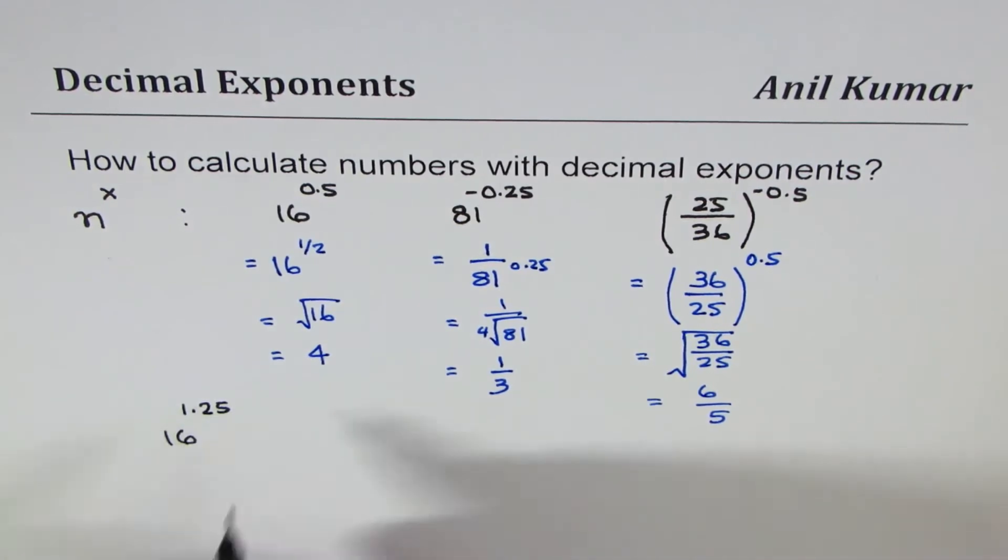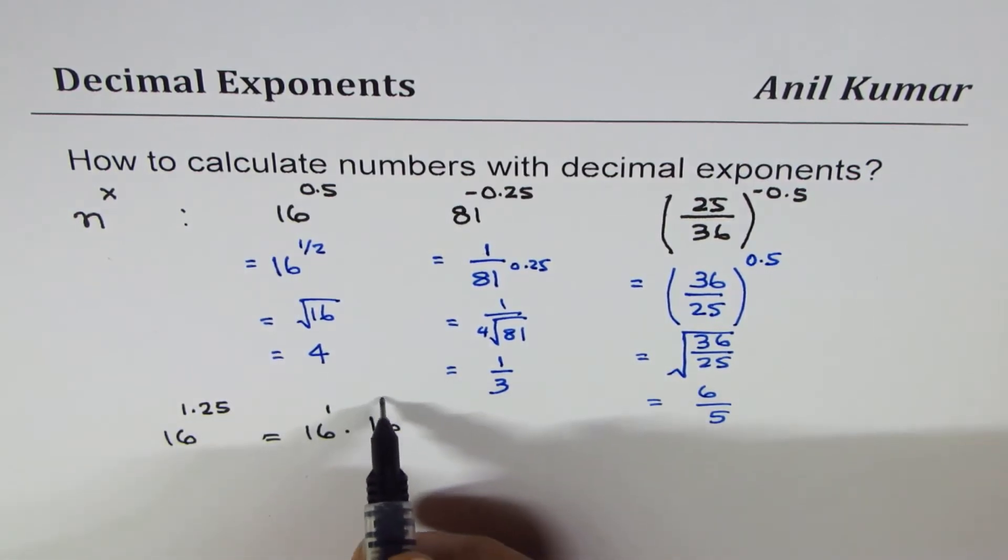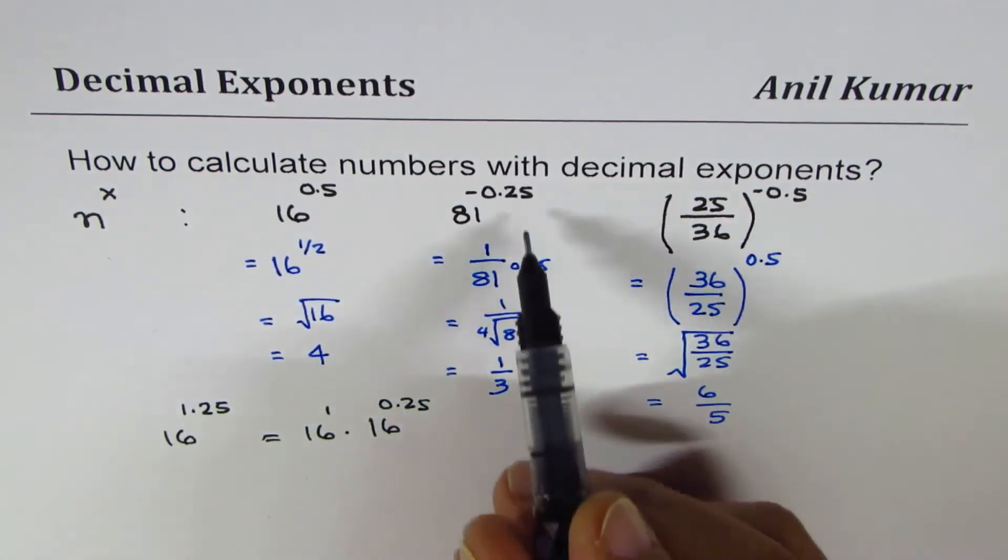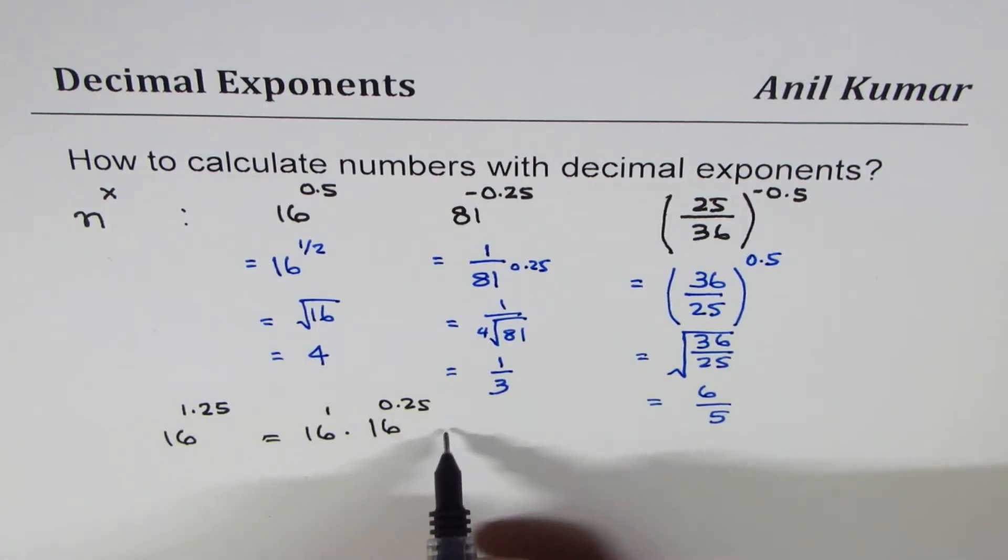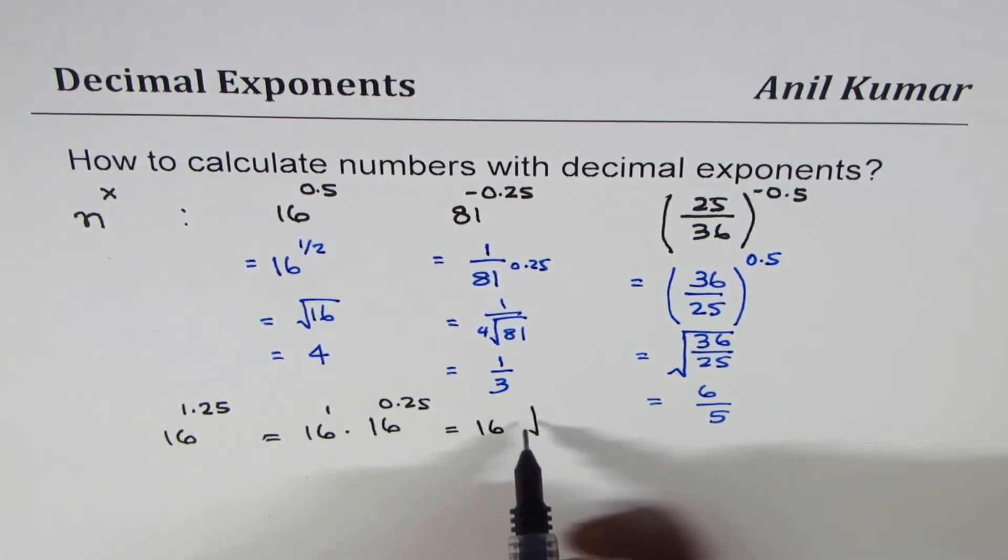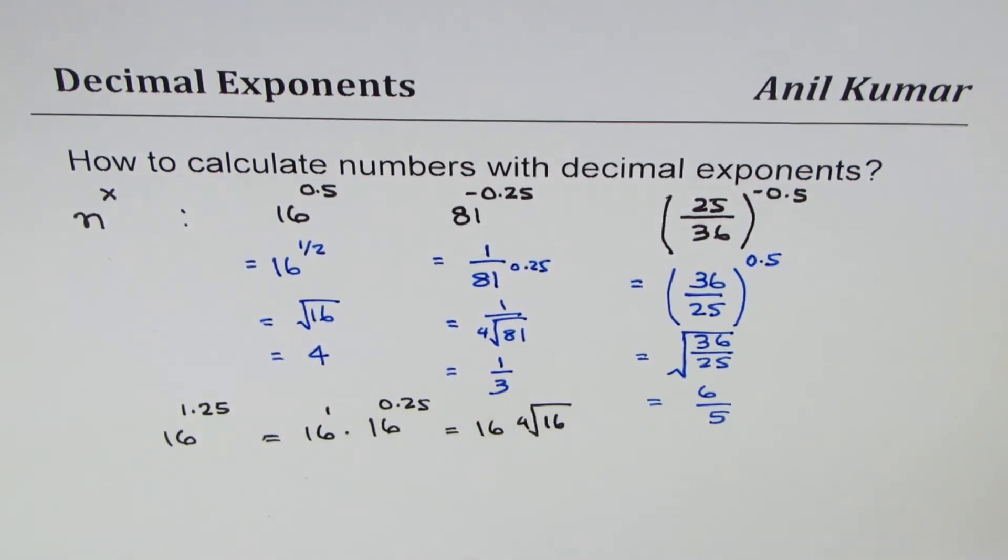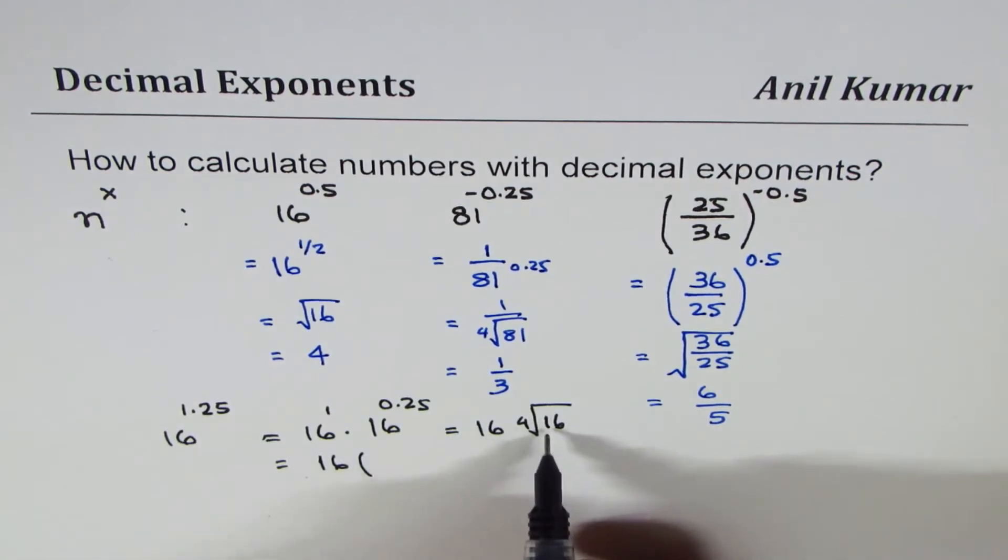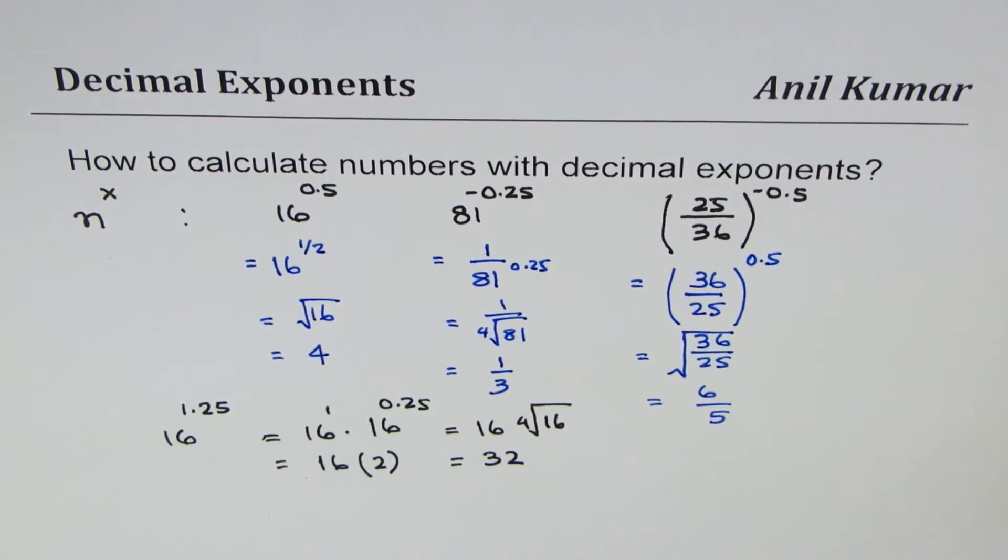If I write 16 to the power of 1.25, it really means 16 to the power of 1 times 16 to the power of 0.25, since when you add them you get 1.25. 0.25 as you have seen is the fourth root, so it could be written as 16 times fourth root of 16. The fourth root of 16: square root is 4, and square root of 4 is 2. So this is 16 times 2, which gives you 32.